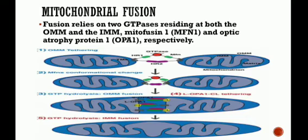At the inner mitochondrial membrane, the unprocessed OPA1 form interacts with the lipid cardiolipin in trans, whereby OPA1 is fusion competent. This association is promoted in the presence of short OPA1, which is generated by proteolytic degradation of long OPA1, thus leading to the fusion of mitochondria.